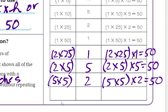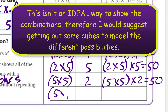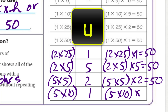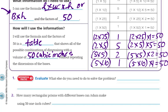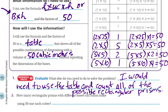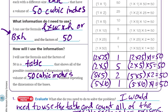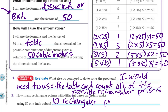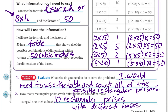Which ones haven't we used? Five times 10 — and then of course you'd have only one layer, because that's 50. So five times 10 times one. You can see all these rectangular prisms are going to look different. Now it says evaluate: what else do you need to do to solve the problem? To solve the question about how many possible, I need to use a table and count all of the possible rectangular prisms. How many rectangular prisms with different bases can Adam make using 51 one-inch cubes? There were exactly 10 — 10 rectangular prisms with different bases.